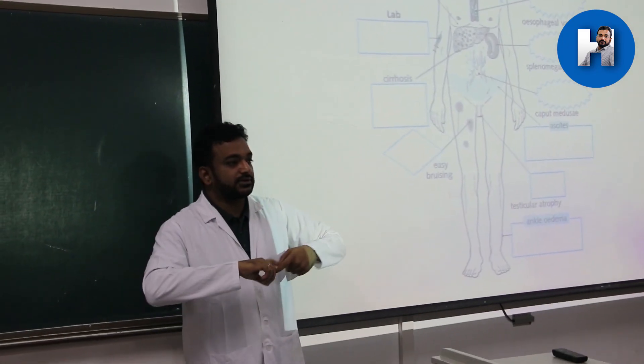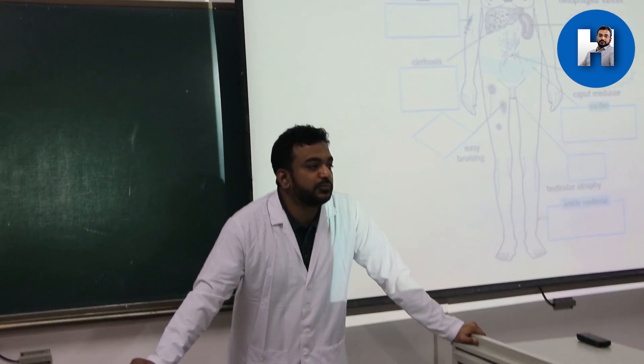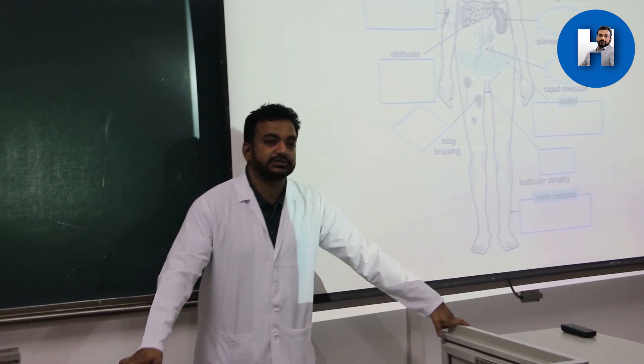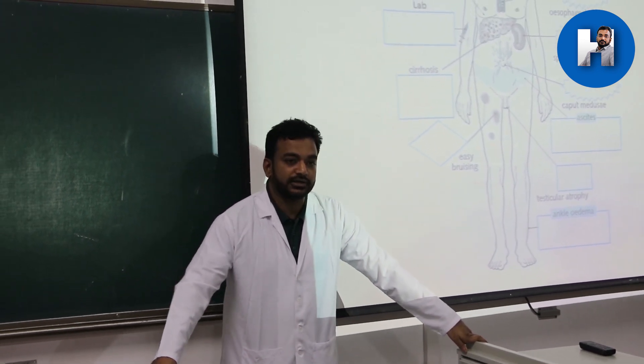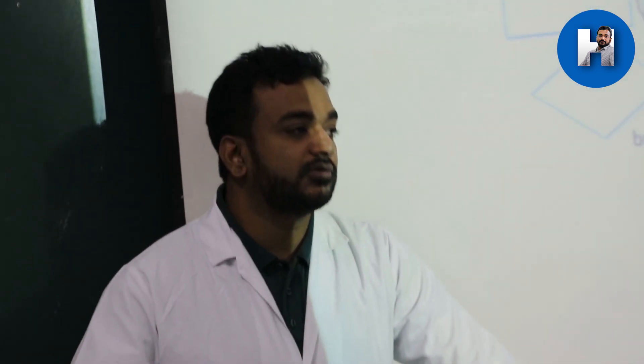So this is a very important connection. We have a special network of vein. This is called submucosal venous plexus in esophagus. Now what is happening? Pressure is increasing in portal vein. This can press back into your lower esophagus and you develop varicosity.